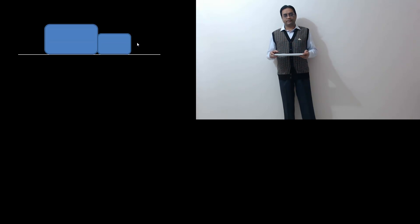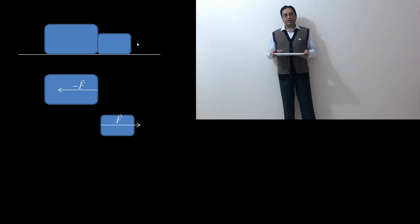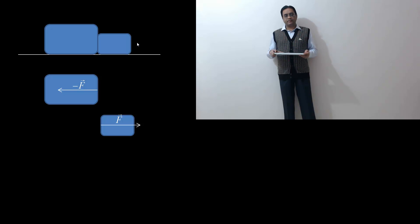For this, let us consider a case of collision. Here we have two bodies colliding with each other. During collision, let us say that the left side body applies vector F force on the right side body, and the right side body applies minus vector F force on the left side body. Let us take the right side body as our system. Only vector F force is acting towards right on this system. Minus F vector force is not acting on this system, and therefore minus F vector force cannot cancel F vector force. So when one body is taken as a system, the two forces do not cancel each other.